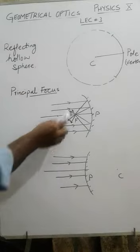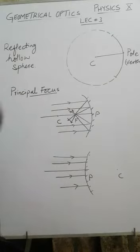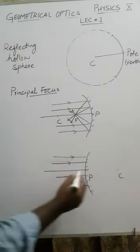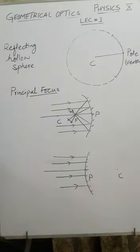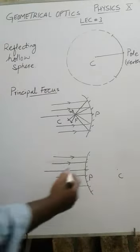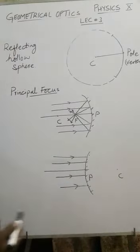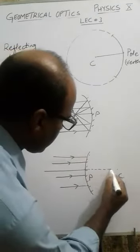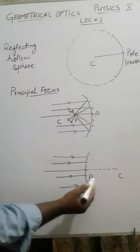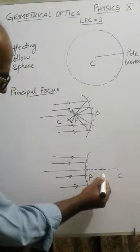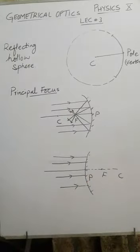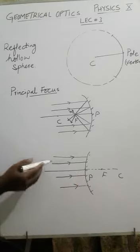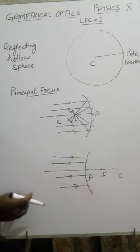In case of a convex mirror, this is the pole. If you extend the sphere, its center of curvature is located behind the mirror. Exactly between the pole and the center of curvature is the principal focus. Rays of light parallel to the principal axis strike this surface.